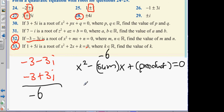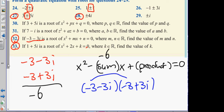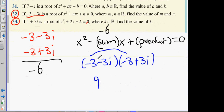And then the product is going to be minus 3 minus 3i multiply by minus 3 plus 3i. So, what's this? Minus 3 times minus 3? Plus 9. Plus 9 minus 3 times minus 3i. Oh, sorry. My bad. Minus 3 times plus 3i.